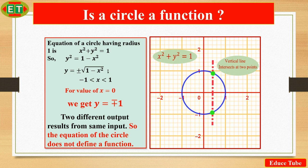First, we shall solve the equation of the circle for y. Our equation is based on radius 1 and it is x squared plus y squared equal to 1. So y squared equals 1 minus x squared. Then we get y equal to plus or minus the square root of 1 minus x squared. So what this equation says is that for values of x where x is less than 1 and greater than minus 1, two values of y result.